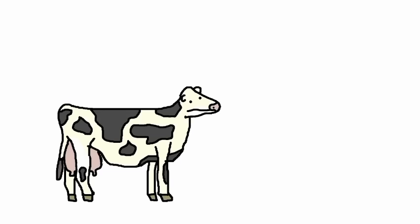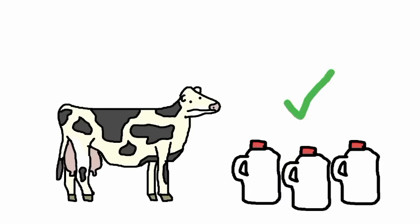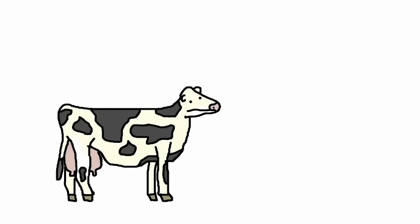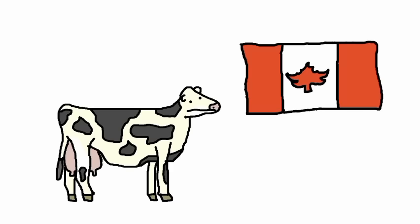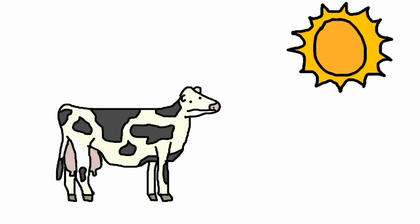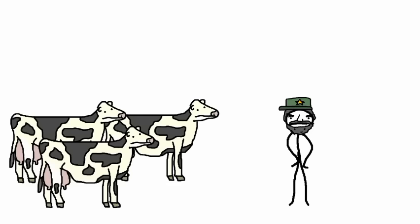So Castro decides to import thousands of Holsteins from Canada. Holsteins are the classic black and white cows, and you can juice these guys for days. They are utterly superior. Only problem is, they're used to living in Canada. So when they're plopped down under the scorching Caribbean sun, it's going to stress them out.